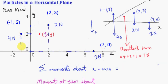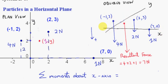Let's start with the 4N force. We want the perpendicular distance of the line of action of the 4N force to the x-axis — that's given by the y value of the coordinates of the point, which is 2. We need to draw in a dotted line parallel to the y-axis in this oblique view. So this distance is 2. The three particles lie in the x-y plane, which is horizontal above the Earth's surface, so the height of these particles above the Earth's surface is constant. The moment of the 4N force about the x-axis is 4 times 2, which is plus 8 Newton meters.